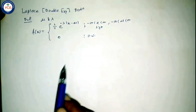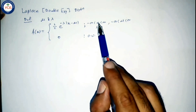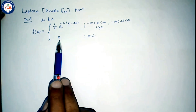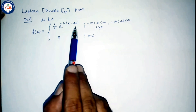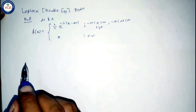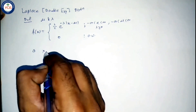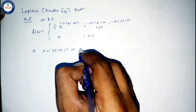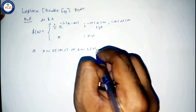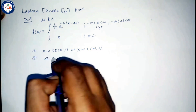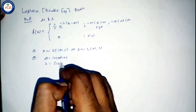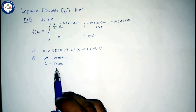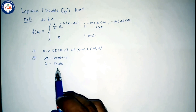Otherwise 0. The most important part of the PDF is the modulus of (x minus mu) — you must concentrate on that. A random variable X following double exponential distribution is denoted as X ~ DE(mu, lambda) or X ~ Laplace(mu, lambda). Here mu is the location parameter and lambda is the scale parameter.